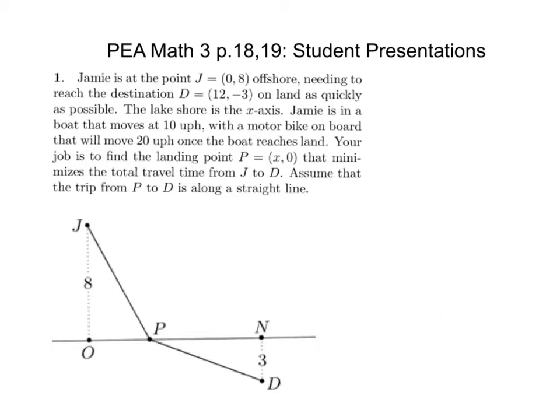The main idea here is you can set it up. We're going to call this point (x, 0). If that's (x, 0), what would this length be? x. This point out here is (12, -3). If that's (12, -3), what would this length be? 12 minus x. It says this point up here is (0, 8). So now I want to find the distance from J to P.